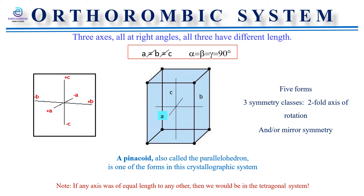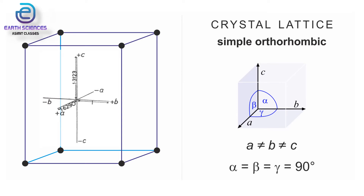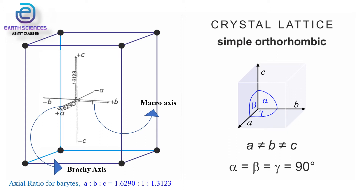Its type class has three planes of symmetry, three axes of symmetry, and a center of symmetry. In the reading position, the vertical axis is known as the C axis, the axis running front to back is the A axis, and the axis running right to left is the B axis. Formerly, the A axis was also known as the brachy axis (short axis) and B axis as the macro axis (long axis). In the barite variety, taking the length of B intercepts as unity, the ratio is a:b:c = 1.6290:1:1.3123.